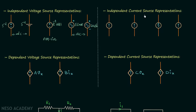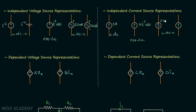For an independent current source, one representation is used for DC — for example, 5 amperes. Another representation is used for non-sinusoidal sources, such as 5e^(−t)·u(t). For alternating current sources, one representation is used for currents like 5 sin(ωt), and another, which is more frequently used today, is used when the current is expressed in phasor form like 5∠30°.